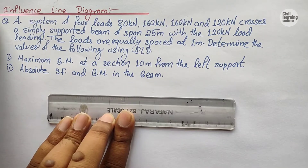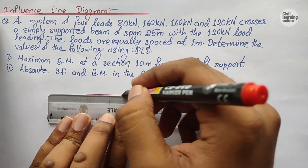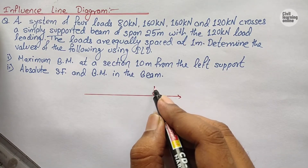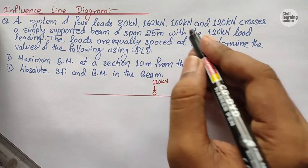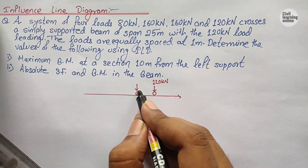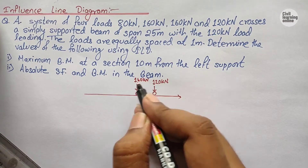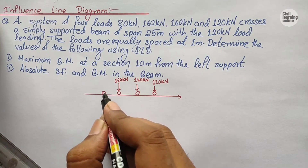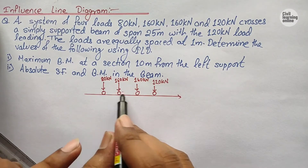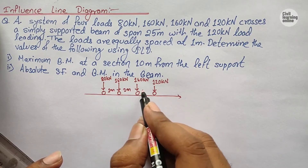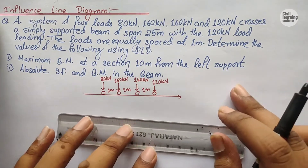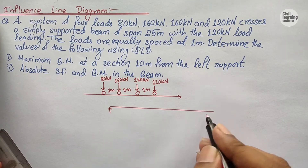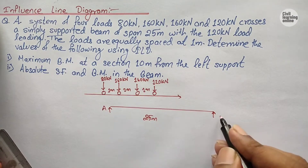According to the question, we are provided with a system of loads moving from left to right, with 120 kN as the leading load. We place 120 kN first, then 160 kN, then another 160 kN, then 80 kN, with a spacing of 1 meter between each load. This load system moves on a span of 25 meters. Let us draw the 25-meter span and mark the supports as A and B.